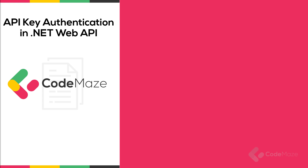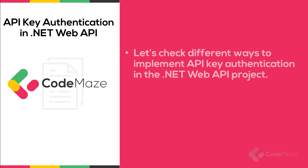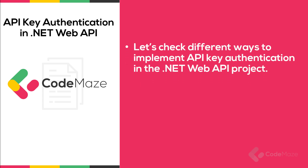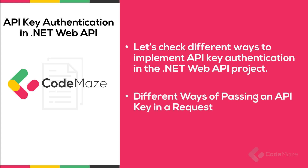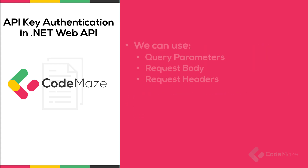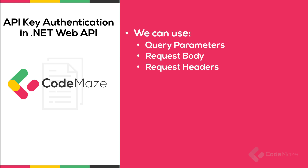Hi everyone! In this video, I'll show you different ways to implement API key authentication in a .NET Web API project. When we use the API key for authentication, there are different ways of passing it in a request. We can use query parameters, request body, and request headers.